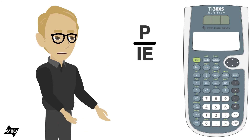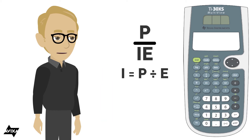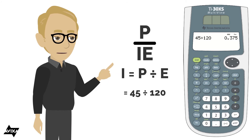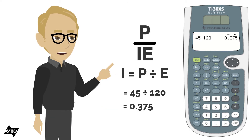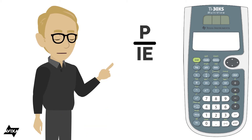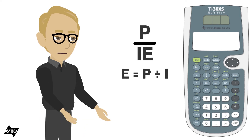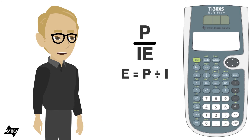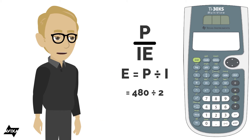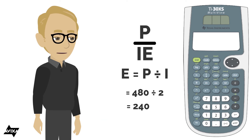Let's do current — that's power divided by voltage. The power is 45 watts and the voltage is 120 volts. 45 divided by 120 tells us we are drawing 0.375 amperes of current. And one more: voltage equals power divided by current. The power consumed is 480 watts and the current draw is 2 amperes. 480 divided by 2 tells us the voltage in this circuit would be 240 volts.